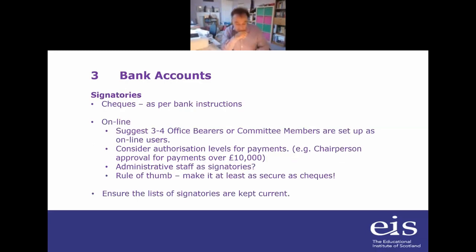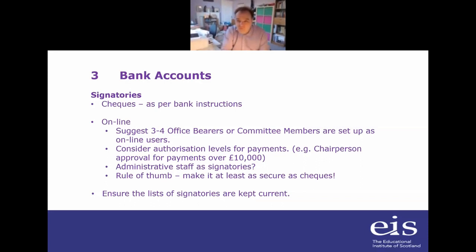Thinking about bank signatories — this is quite important. A few years ago, when organizations were moving from cheque payments to online payments, what I found as an auditor was that they had the most strict documented procedures for cheque signatures — two signatures required if over £500, one of them has to be the chairman, etc. — but then they moved to online payments and suddenly the bookkeeper could make online payments with no oversight. We don't want to get there.